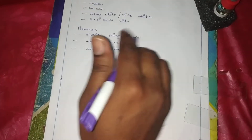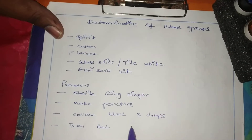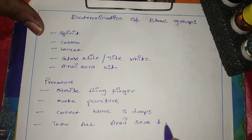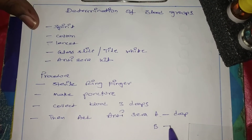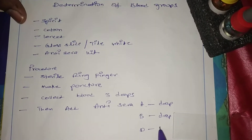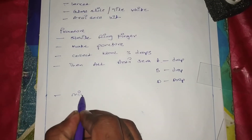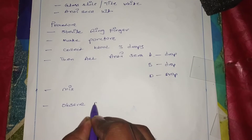Whether you use three slides or a single slide, collect three drops. Then add anti-sera A to one drop, anti-sera B to another drop, and anti-sera D to the third drop, separately. Then mix it and observe for clumps.